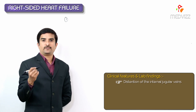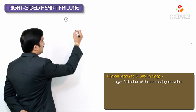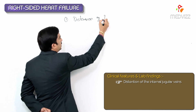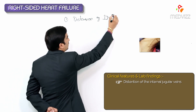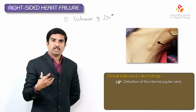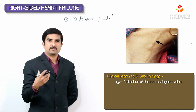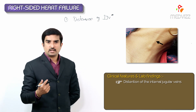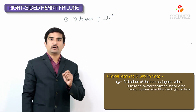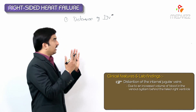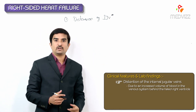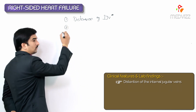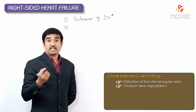First, there will be distension of the internal jugular veins. Whenever there is accumulation of blood in the superior vena cava, automatically there will be accumulation of blood in the jugular veins. The increased volume of blood in the venous system behind the right ventricle is responsible for the distension of the internal jugular veins.